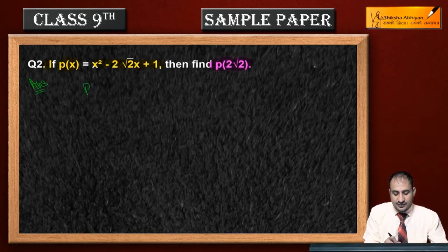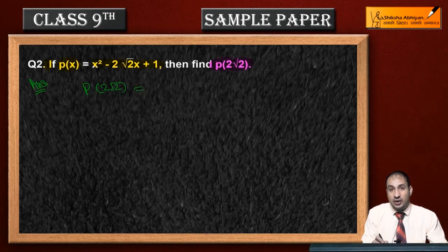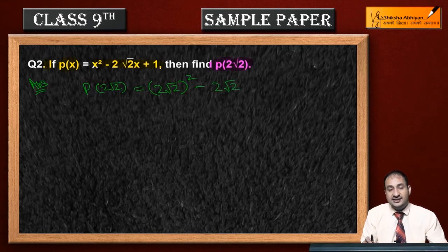Since in p(x), x की जगह में क्या put कर रहा हूं 2 root 2. तो अब x square है तो ये क्या हो जाएगा: 2 root 2 whole square minus 2 root 2 into x, x की जगह again 2 root 2 रखेंगे, plus 1.